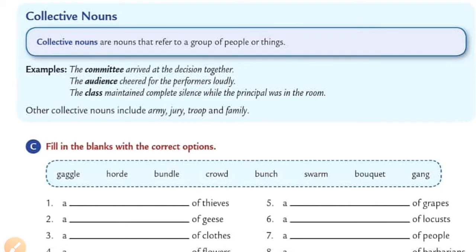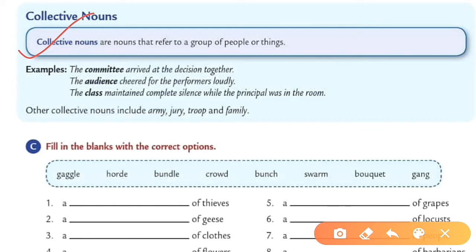Move to collective nouns — one of the important kinds of noun. Collective nouns refer to a group of people or things, not a single person or thing. For example: the committee arrived at the decision together — committee is a group of people, so committee is your collective noun. Also: the class maintained complete silence while the principal was in the room — a single student cannot make a class, so class is a collective noun.